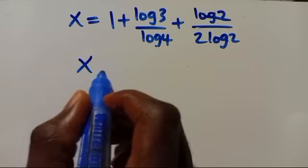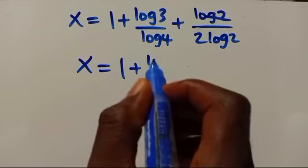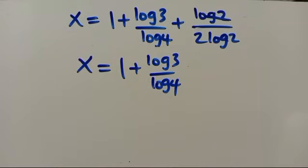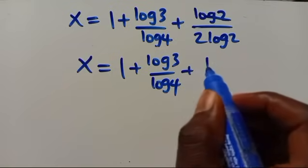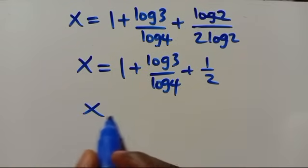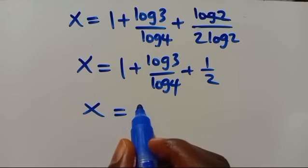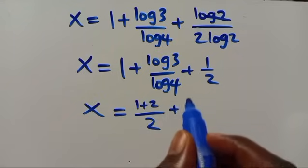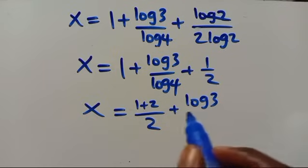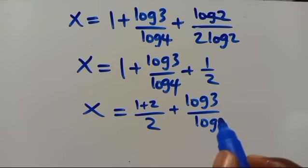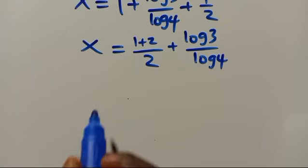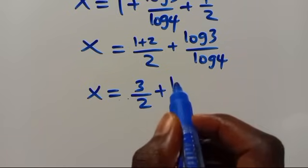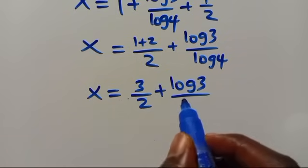From here we have X equals 1 plus log 3 over log 4. Note that log 2 over log 4 equals 1 over 2, so combining 1 plus 1 over 2 gives 3 over 2. Therefore X equals 3 over 2 plus log 3 over log 4.